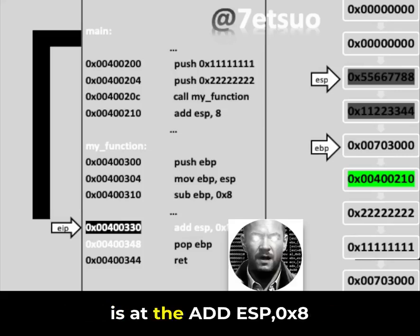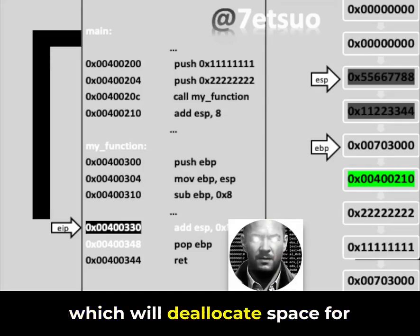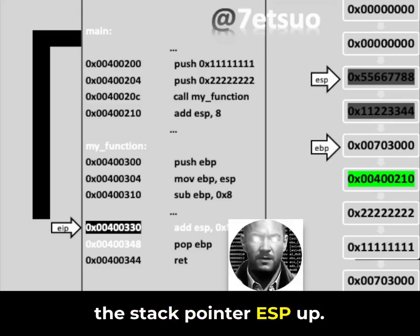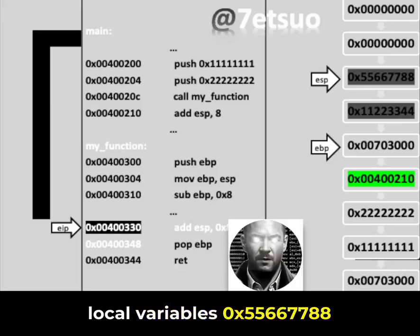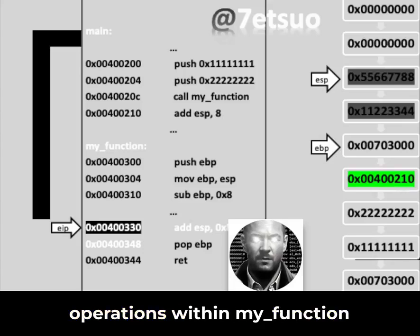EIP is at the add ESP 0x8 instruction within my_function, which will deallocate space for the local variables by moving the stack pointer, ESP, up. The stack currently shows the local variables 0x55667788 and 0x11223344 that were placed there by previous operations within my_function.